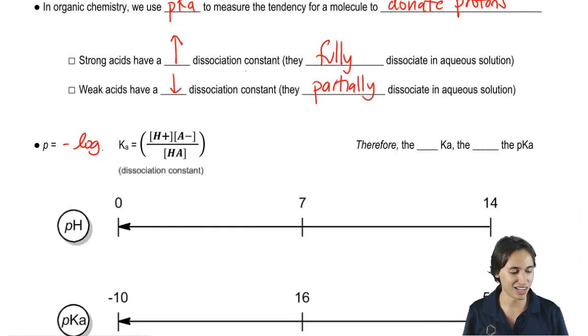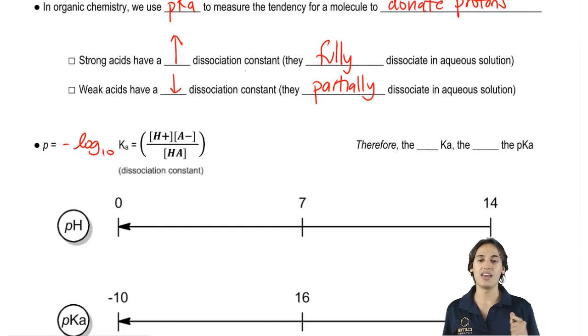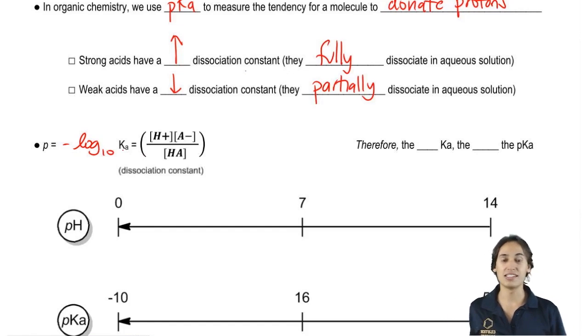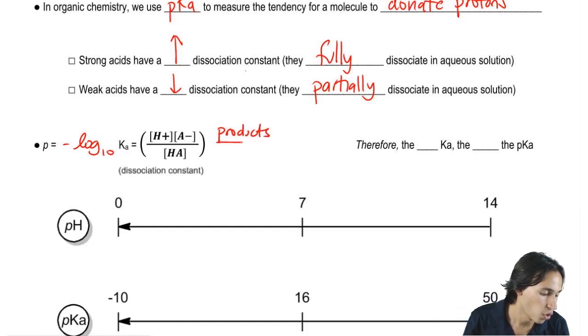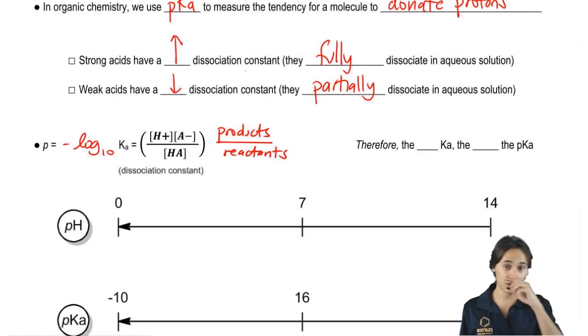Now let's remember what is pKa. Well, p stands for the negative log base 10, and Ka stands for products over reactants.